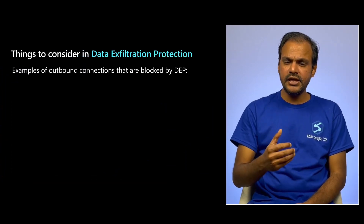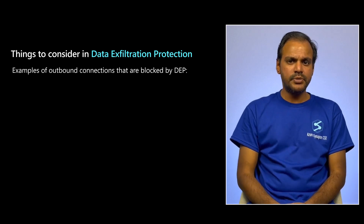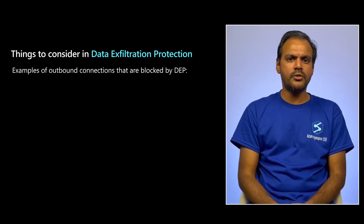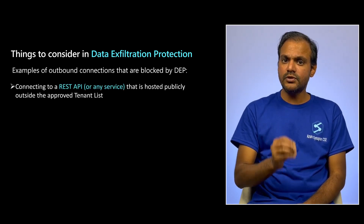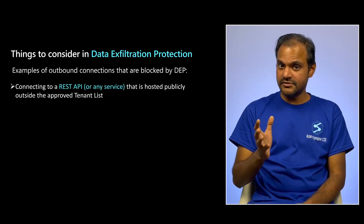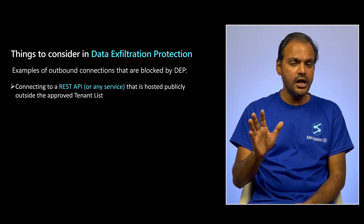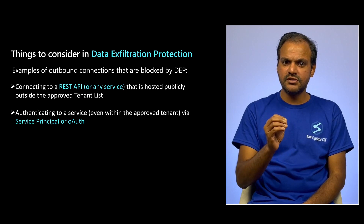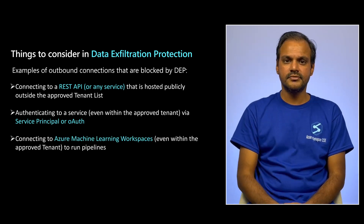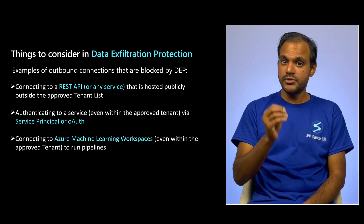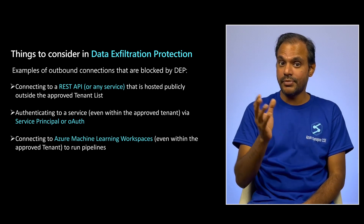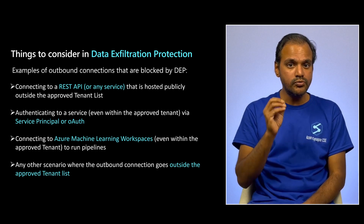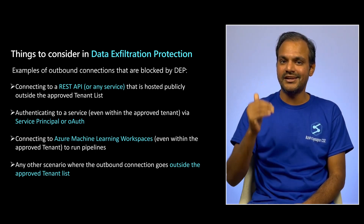When you enable DEP in a Synapse workspace, it will prevent you from doing certain operations commonly performed in pipelines, such as connecting to a REST API or any service hosted publicly outside your organization, authenticating to a service via service principal or OAuth, connecting to Azure Machine Learning workspaces to run pipelines, and many other scenarios where the outbound connection goes outside the approved tenant list.